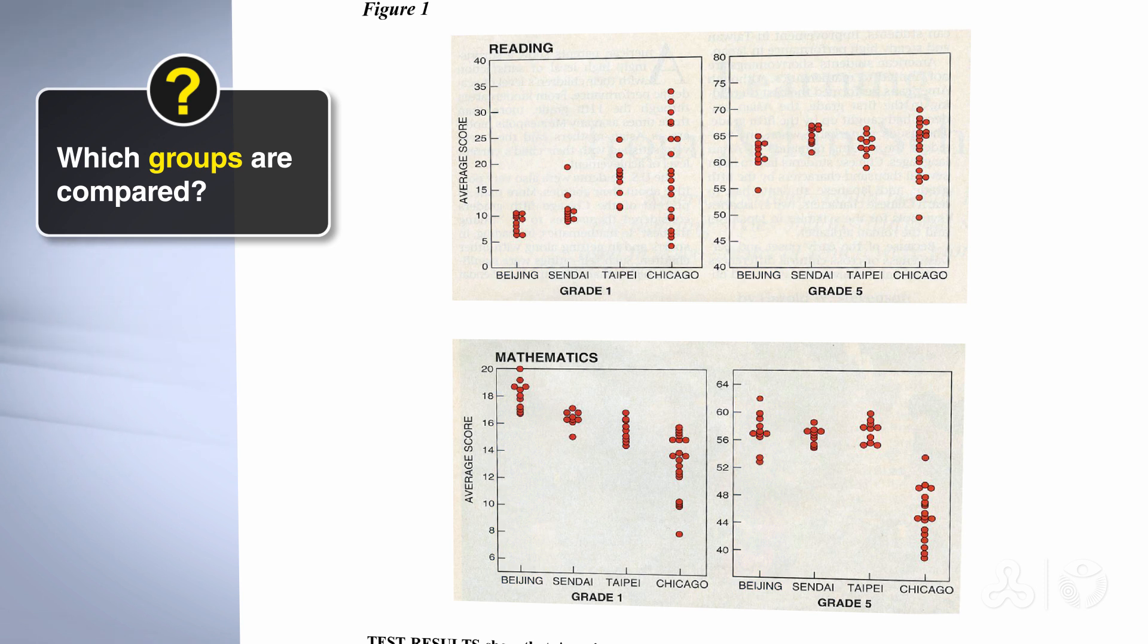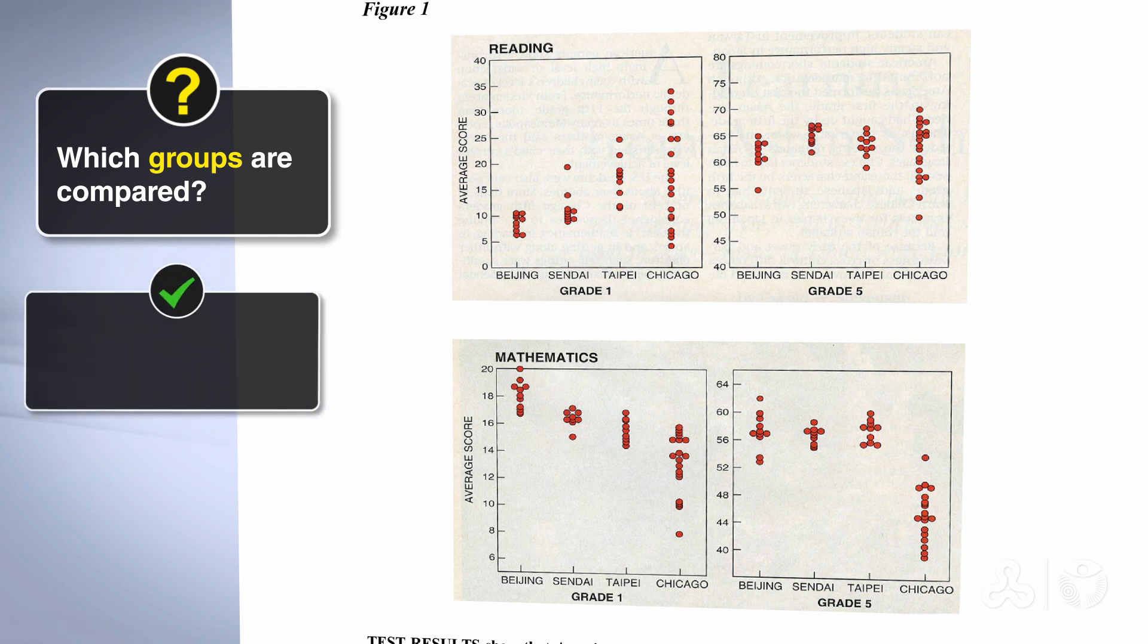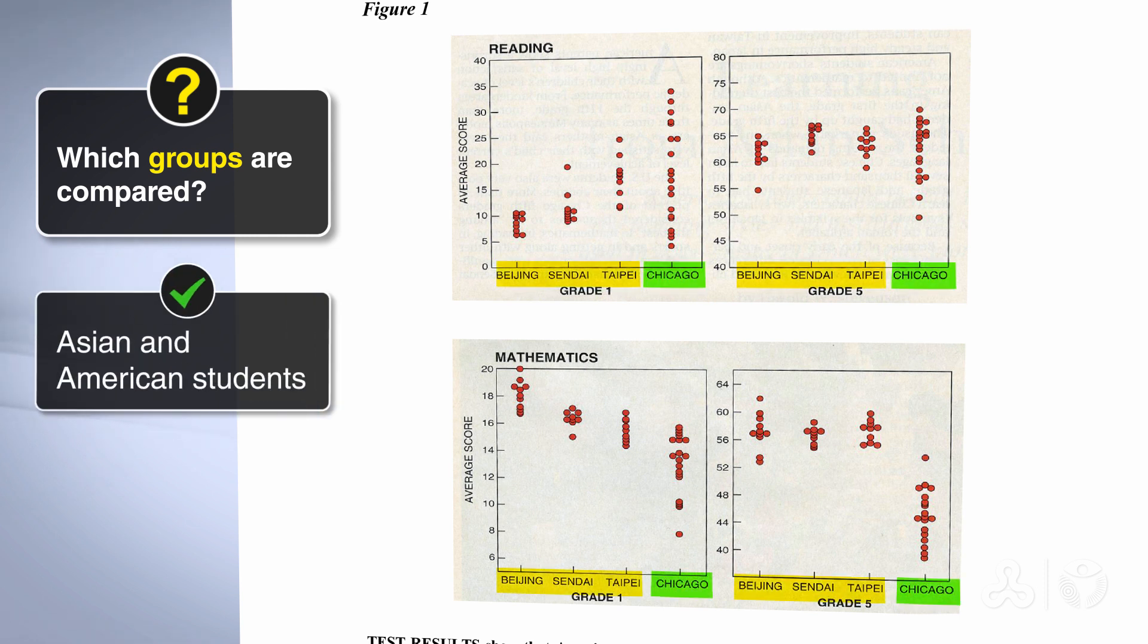Now when we say, when we answer the question who is compared, we have to refer to the people. We can't say we're comparing cities. We need to compare the people. So we're comparing Asian and American students.